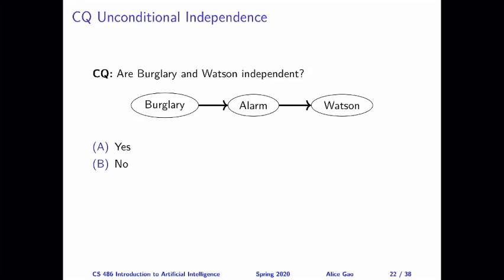For each example, I'm going to ask you two questions. The first one is on unconditional independence, and the second one is on conditional independence. In this video, I'm only going to give you the correct answers as well as some intuitive explanations. In a separate video, I will include more formal verification of the answers by calculating probabilities.